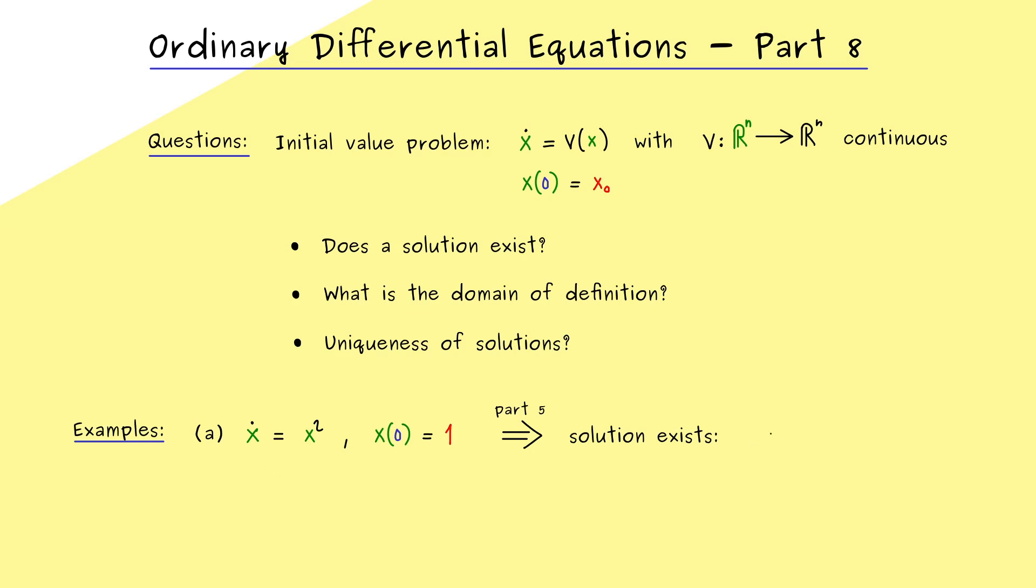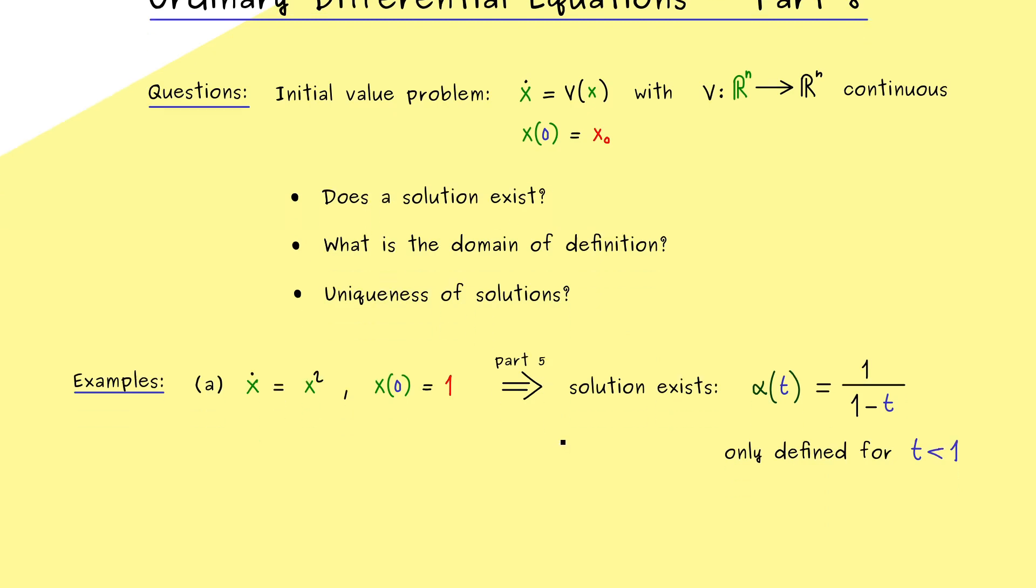and we call it alpha again. More precisely, alpha(t) is given as 1/(1-t). So if you don't believe it, you can just calculate the derivative and check that the equation is fulfilled and also the initial value is correct. However, what I want to point out here is that this solution is not defined on the whole real number line. Indeed, with our initial value t = 0 in mind, we can conclude that this solution is only defined for t < 1. Therefore, the maximal domain of definition we can choose for this solution here is not the whole real number line. So this is definitely something that can happen and something we have to keep in mind.